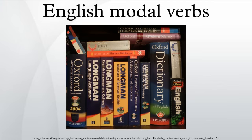The meaning of the negated form depends on the usage of the modal. When possibility is indicated, the negation effectively applies to the main verb rather than the modal — 'that may/might not be' means 'that may fail to be true'. But when permission is being expressed, the negation applies to the modal or entire verb phrase: 'you may not go now' means 'you are not permitted to go now'.